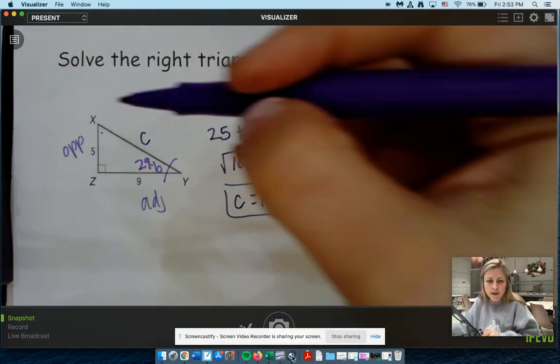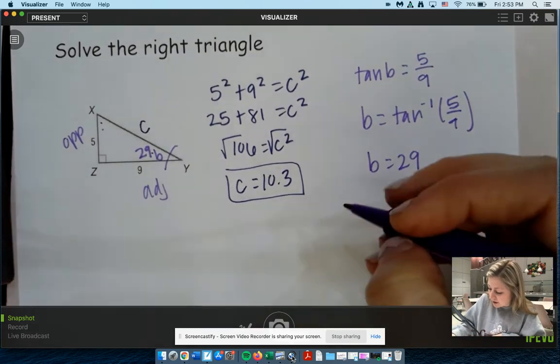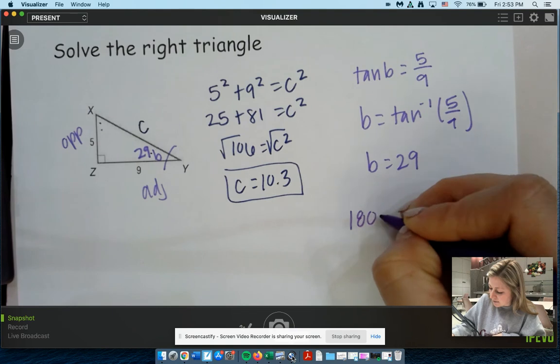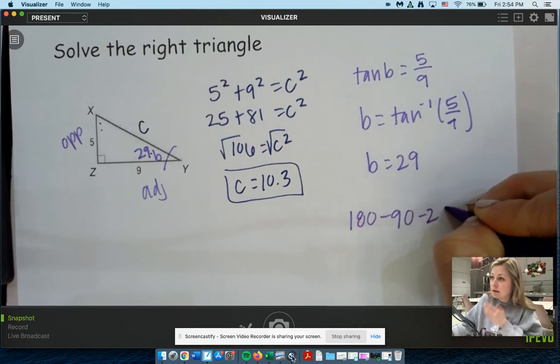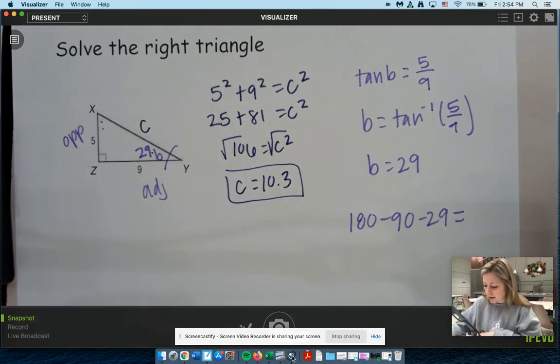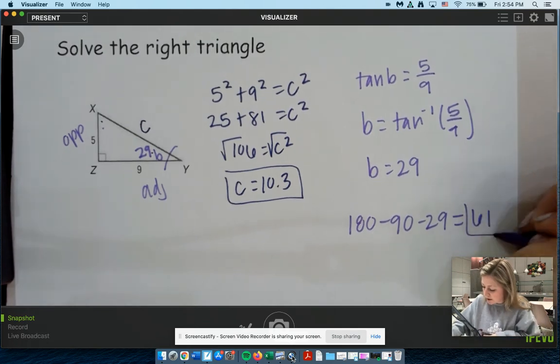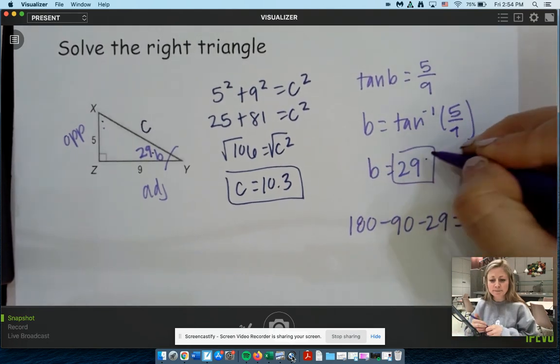Now don't make more work for yourself, kids. What's an easy way to find that missing angle X up there? We have a triangle and we know that they add to 180. So 180 minus 90 minus 29. Gives a 61. So there we go. We found our two missing angles and our missing side.